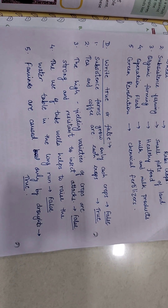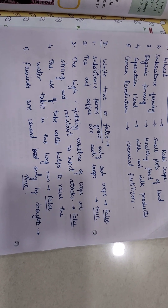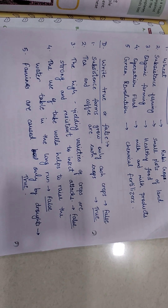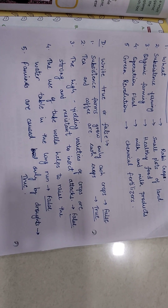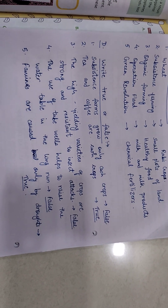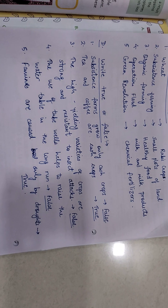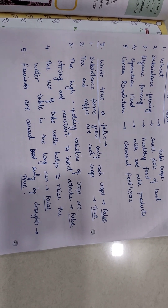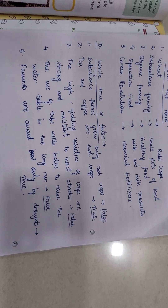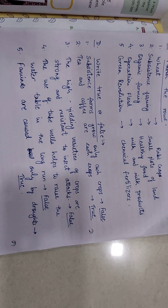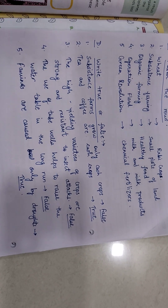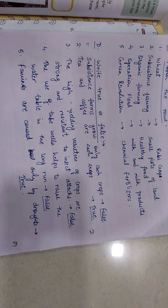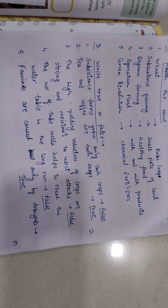Third: the high yielding varieties of crops are strong and resistant to insect attacks — false. Fourth: the use of tube wells helps to raise the water table in the long run — false. Fifth: famines are caused only by droughts — true.